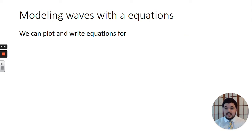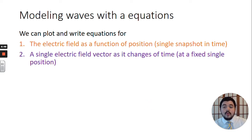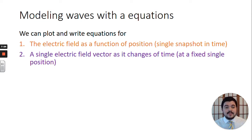Modeling waves with equations: we'll use sines and cosines that plot out the sine and cosine graph we saw on our first slide. We can write equations for the electric field as a function of position — a single snapshot in time — or we can plot a single electric field vector, just one slice of the wave, and see how it changes over time at a fixed position. We can do one or the other.